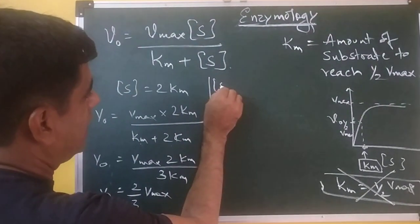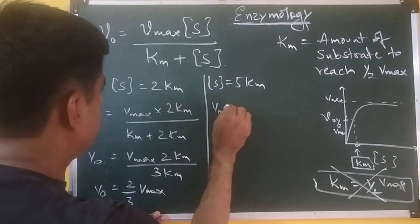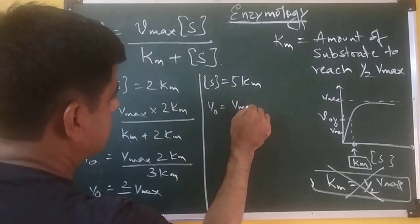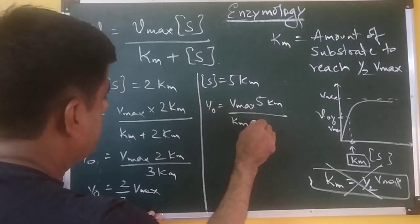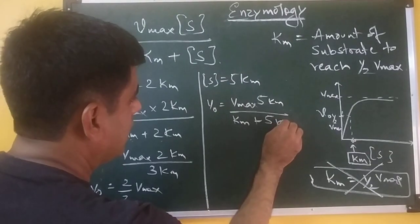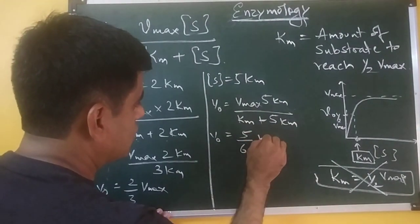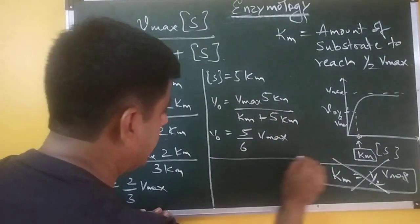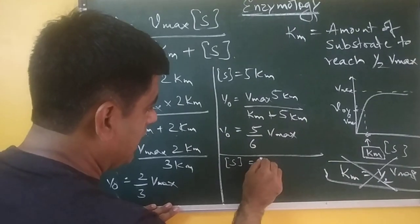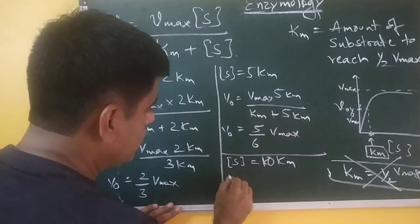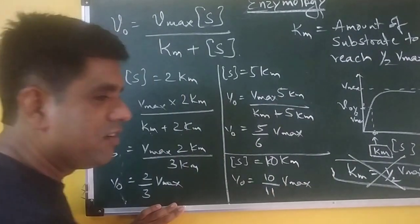Let us see if you take the substrate value 5 times that of Km. What happens? So, here it will be V0 equals Vmax times 5 Km upon Km plus 5 Km. So, this will be V0 equals 5 by 6 of your Vmax. Even if you take it 10 times the value of Km, the value of substrate, you reach 10 by 11 times of your Vmax.